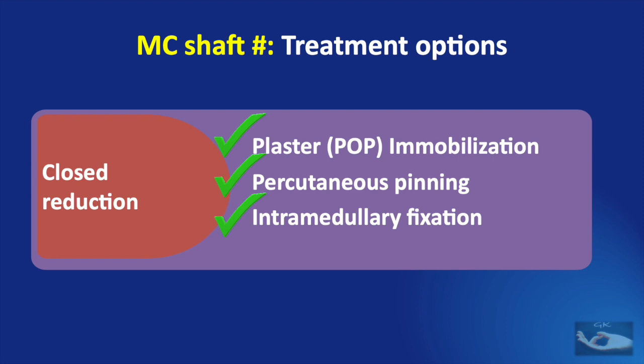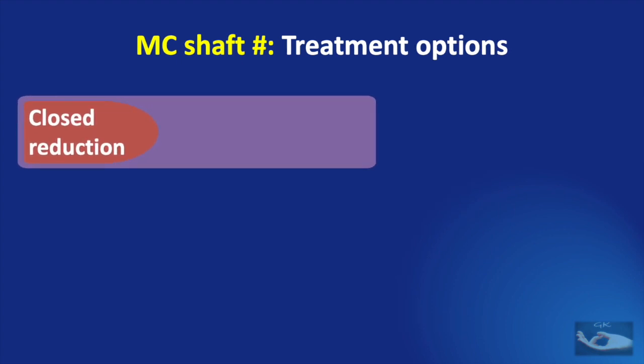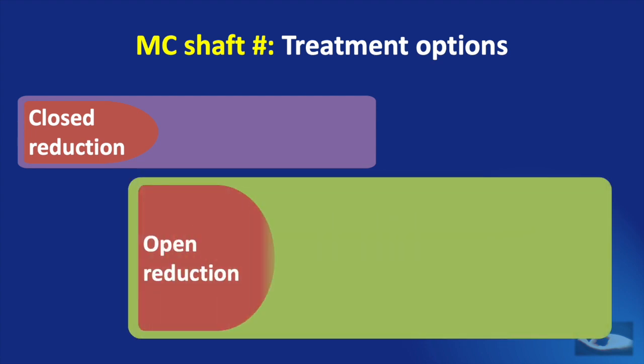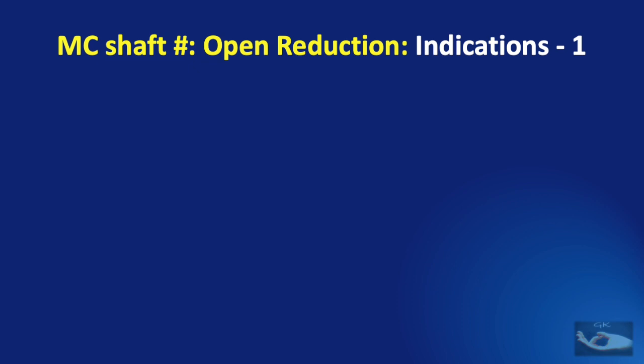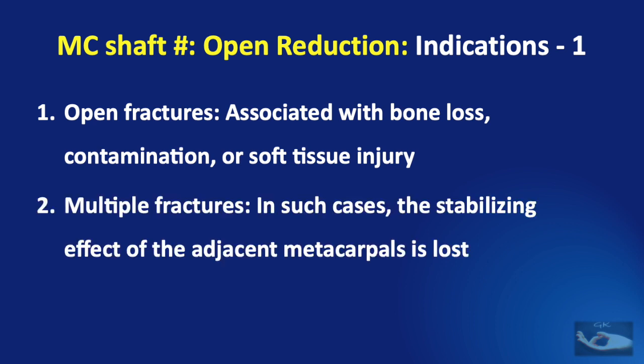So far we have seen three methods of immobilization following closed reduction of metacarpal shaft fractures. But sometimes closed reduction may not be ideal, in which case we will have to do open reduction. The indications for open reduction are: open fractures, especially if associated with bone loss, contamination, or soft tissue injury; and multiple metacarpal fractures, since the stabilizing effect of adjacent metacarpals is lost and closed reduction will not be effective.